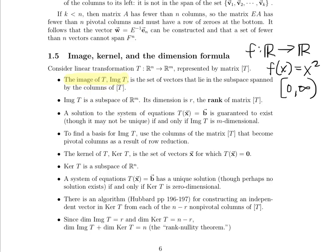The image of T is a subspace of R^m, and its dimension is r — the rank of the matrix T. When we talk about the rank of a matrix, that means the dimension of the subspace that this matrix is mapping us to. A solution to the system T·x = b is guaranteed to exist, though it may not be unique, if and only if the image of T is m-dimensional. If the image and the codomain have the same dimension, a solution is guaranteed to exist. We'll do many examples, so don't be too concerned if this is still fuzzy.